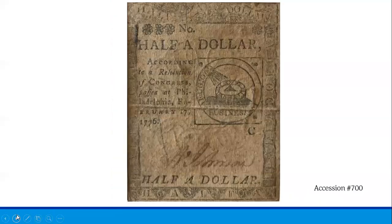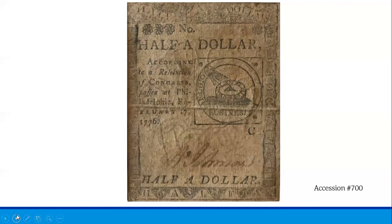On the reverse side of the bill featuring the 'We Are One' design, we often see the Fugio image, also designed by Benjamin Franklin. This image features a design of the sun shining down on a sundial, a symbol for the measure of time. On the connecting lines is written 'Fugio,' meaning 'I flee' or 'I fly,' to remind viewers that time flies. It also features the phrase 'mind your business' just underneath the sundial, implying that no American should misuse their time or do anything unessential to the task of securing American economic freedom from Britain.